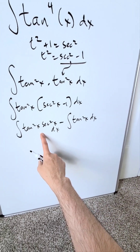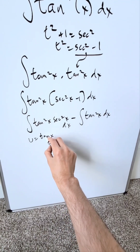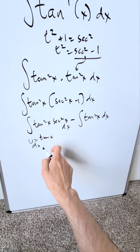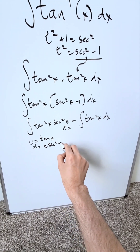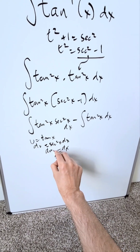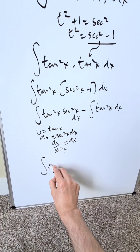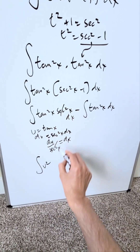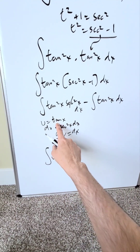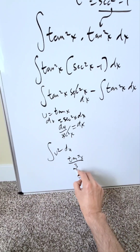Focus right over here — use substitution. If u = tan(x), you can easily handle this part. du = sec²(x) dx, so dx = du / sec²(x). Bringing in these substitutions, you will have u², which cancels out with sec²(x), leaving u² du. Taking this to completion and resubstituting u, you get tan³(x) / 3 from this part.